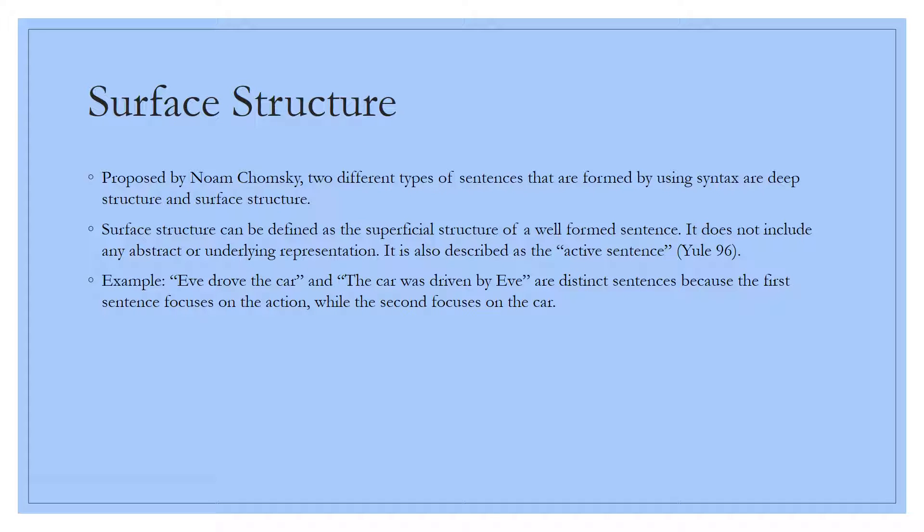Surface structure was proposed by Noam Chomsky, who proposed that there were two different types of structures: surface structure and deep structure. Surface structure can be defined as the superficial structure of a well-formed sentence. It's also described as the active sentence. For example, Eve drove the car. Since Eve drove the car is only focusing on the action, it's considered the surface structure.